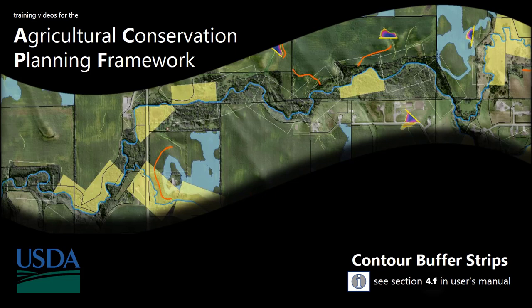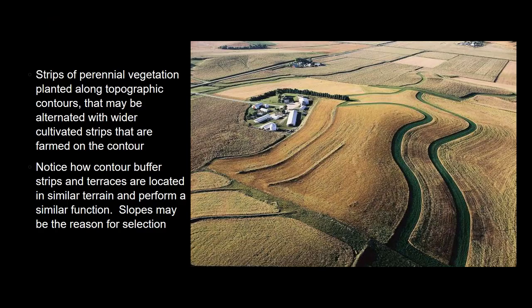In this video we're going to go over how to generate contour buffer strips within the watershed. Contour buffer strips are strips of prairie grass or other perennial vegetation placed along topographic contours, and they are used to intercept overland flow and sediment from running off into natural waterways.